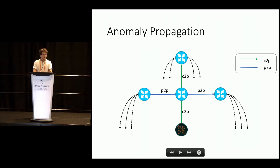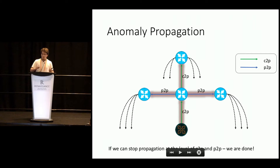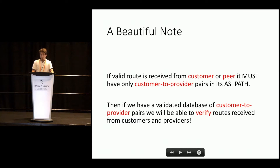Let's speak about how anomalies are propagating. Is there any difference between propagating a normal prefix or a hijack prefix? Of course not — it propagates to upstream providers, to peers, and then to downstream. And if we are able to detect this propagation at the level of links between customer and providers and peers, we are done. Instead of making a goal to verify all AS paths in the world, it's enough to verify AS paths for prefixes received from customers and peers.